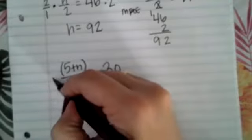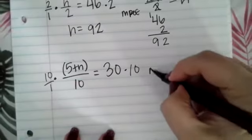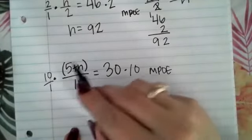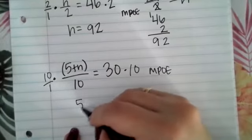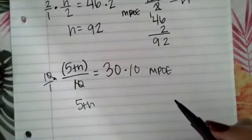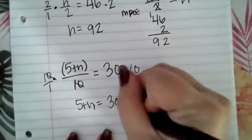So you're going to start off by multiplying times 10. So you're going to start off using that multiplication property of equality. So that way you're left with just this numerator. So 5 plus N, because when we multiply by 10 and divide by 10, they cancel out. So 5 plus N is equivalent to 30 times 10, which is 300.